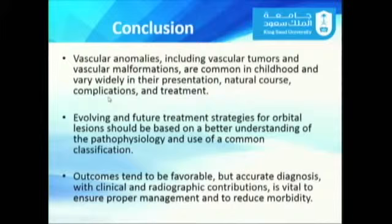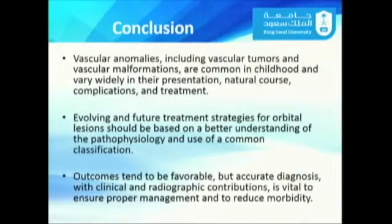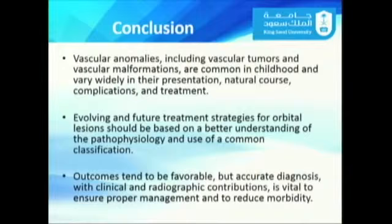In conclusion: vascular anomalies including vascular tumors and vascular malformations are common in early childhood and vary widely in presentation, natural course, complications, and treatment based on lesion component. Evolving treatment strategies for orbital lesions should be based on better understanding of pathophysiology and use of a common classification. Outcomes tend to be very good, but accurate diagnosis based on clinical and radiological findings is essential before initiating proper treatment.